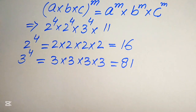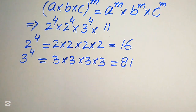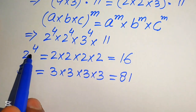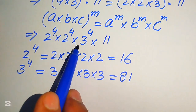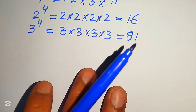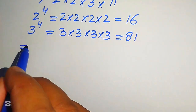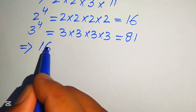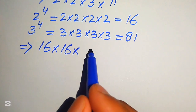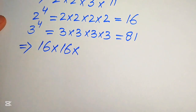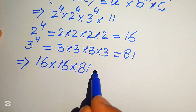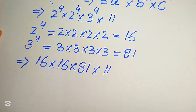I hope you understand why I am explaining these steps. In the next step we substitute the values of 2 to the power of 4 and 3 to the power of 4 into the expression. So our expression becomes 16 multiplied by 16 multiplied by 81, and 81 is also multiplied by 11.